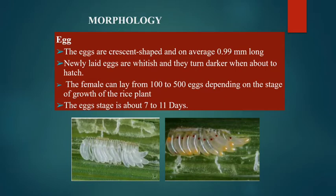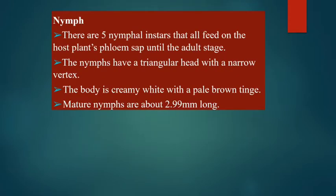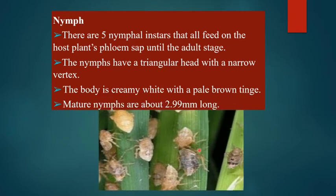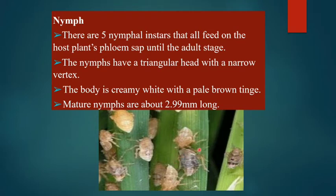There are five nymphal instars that all feed on the host plant's phloem sap until the adult stage. The nymphs have a triangular head with an arrow-shaped vertex; the body is creamy white with a pale brown tinge. The mature nymphs are about 2.99 mm.